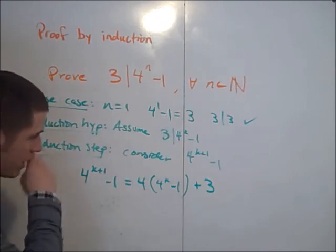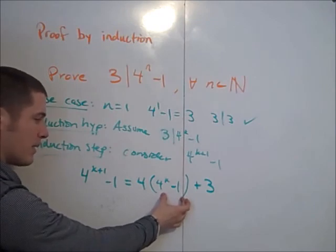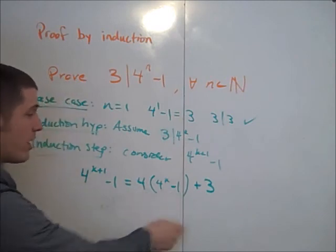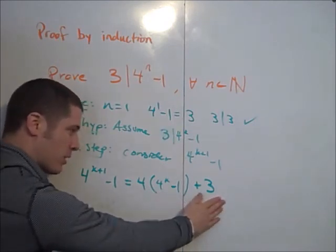Now look at this. We already know by the induction hypothesis that 3 divides this number. 3 divides 4 to the k minus 1. So 3 divides the product of 4 to the k minus 1 and 4. Also, 3 divides 3. We know that.